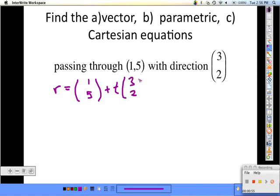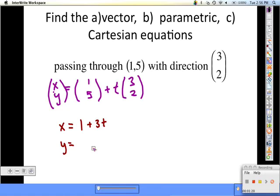Instead of r we would say that this is (x, y). That's our vector equation. Our parametric equations would be x equals 1 plus 3t - I'm just going straight across the first row equating things - and then y equals 5 plus 2t.